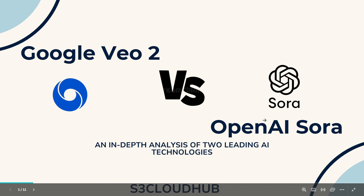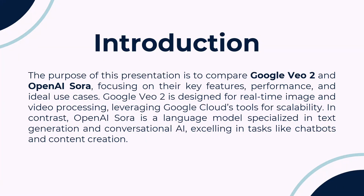Let's start with the objective of today's video: a quick comparison between Google VO2 and OpenAI Sora. Google VO2 is an AI platform mainly focused on real-time image and video processing, integrated seamlessly with Google Cloud. On the other hand, OpenAI Sora specializes in natural language processing and text generation.